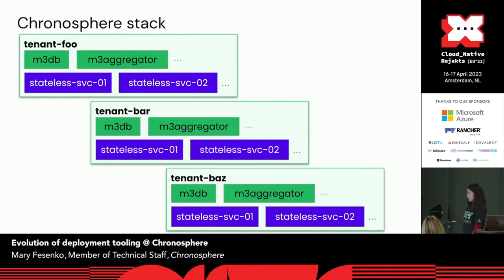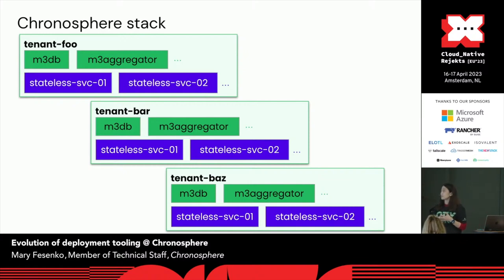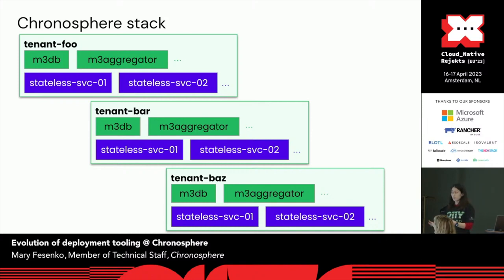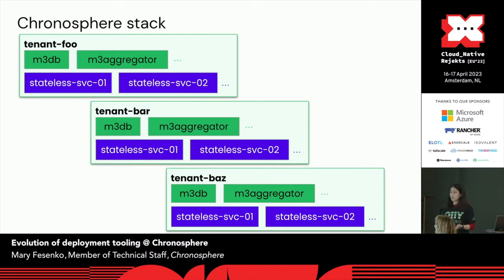When we speak about deploying Chronosphere, what does it actually mean? We run all of our software in the cloud, and our clusters are managed by Kubernetes. We run in a multi-tenant setup where for each paying customer of Chronosphere, we have a completely separate Chronosphere stack, modeled in Kubernetes as separate namespaces. In each tenant namespace, we deploy a bunch of stateful and stateless services. For our stateful components — such as M3DB and M3 Aggregator — we have custom Kubernetes operators that help us automate operations for managing the database cluster.